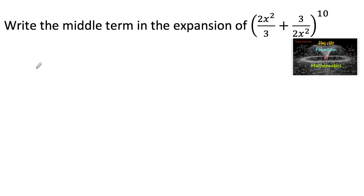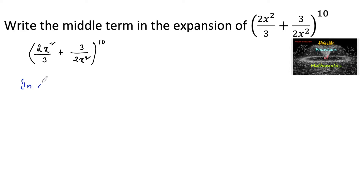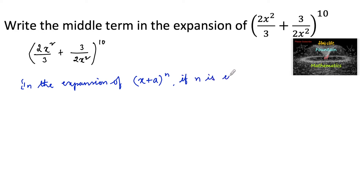Write the middle term in the expansion of (2x² / 3 + 3 / 2x²) whole to the power 10. Since we know that in the expansion of (x + a)^n, if n is even, then the middle term is the (n/2 + 1)th term.